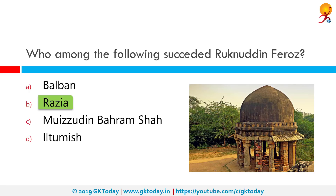Ruknuddin Firoz was the brother of Razia and son of Iltutmish, who was assassinated within six months of getting the throne. Razia is known for being the only female ever to rule the Delhi Sultanate, and she rose to the throne because her brother was assassinated.